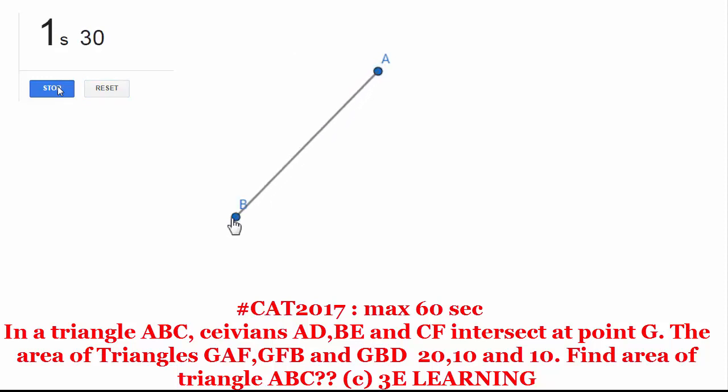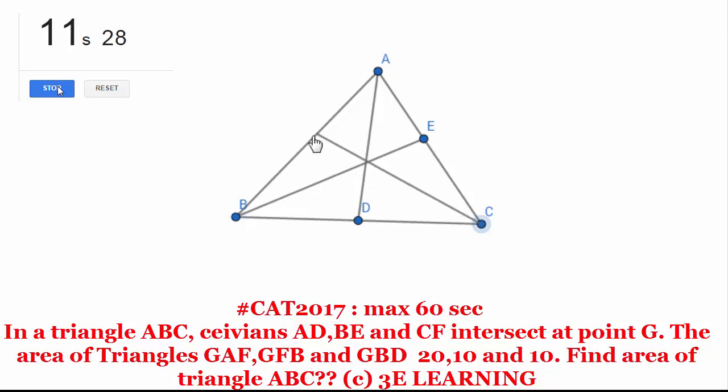We have triangle A, B, C. AD is a cevian, BE is a cevian and CF is a cevian, and we have point of intersection called G.